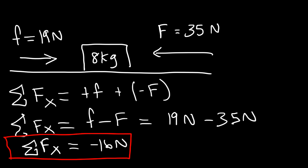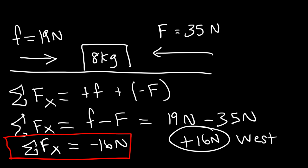If a test question asks only for the magnitude of the net force, you report positive 16 newtons — the magnitude of a vector is always positive. The negative sign tells you the direction: the net force is due west. So you can say 16 newtons west, giving magnitude with direction, or negative 16 newtons to indicate it's going towards the left.